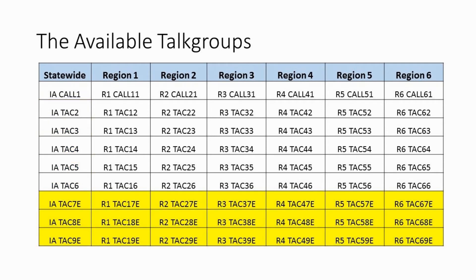The last set of talk groups are slated to be encrypted interoperable talk groups. As of 2019, those are not ready for use due to the need for encryption management practices to be established. However, once that is completed, these talk groups will be active and the encryption keys will be given to ISICS users. All of these interoperable tactical talk groups can be patched into your local channels or talk groups if needed.